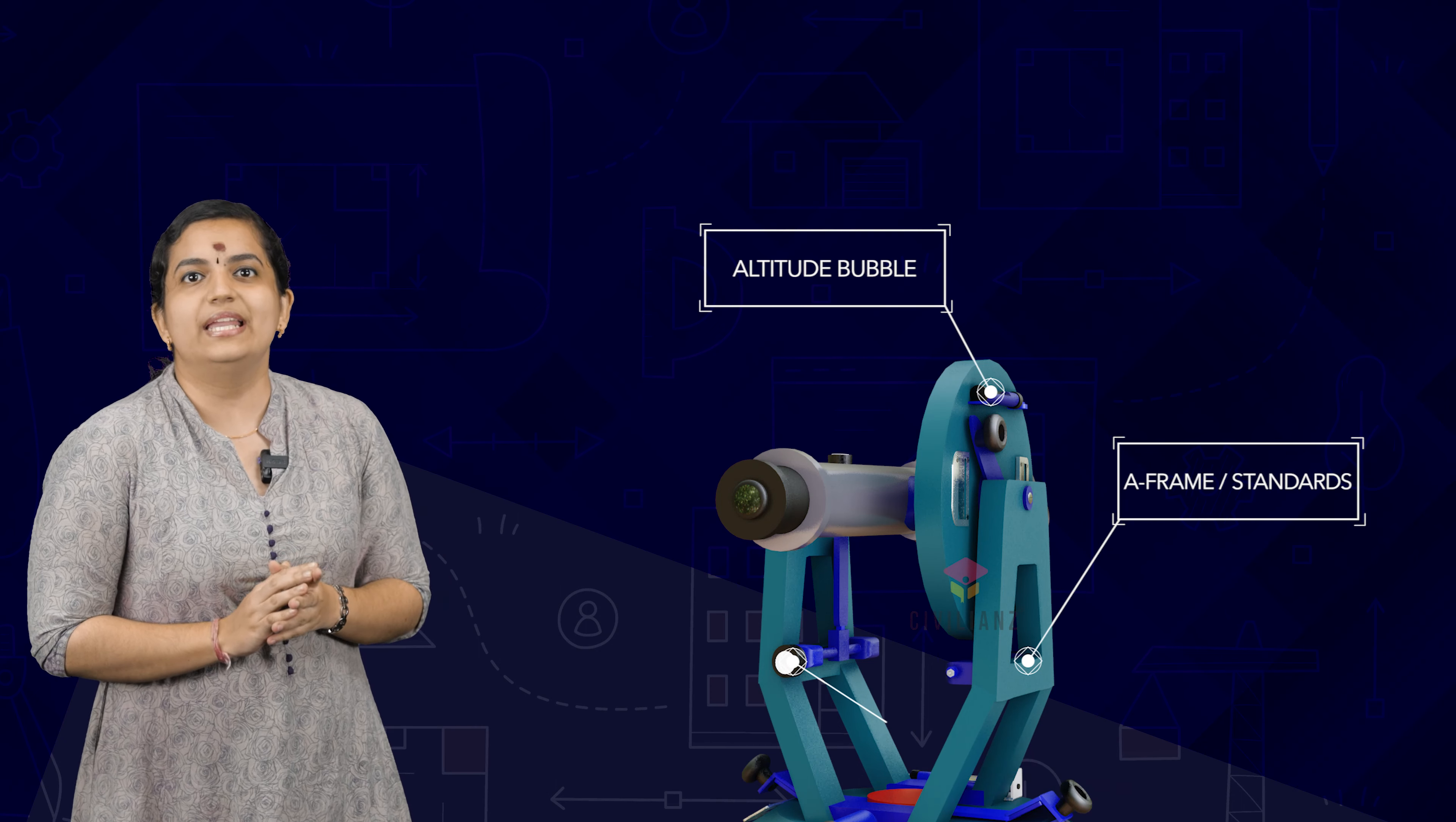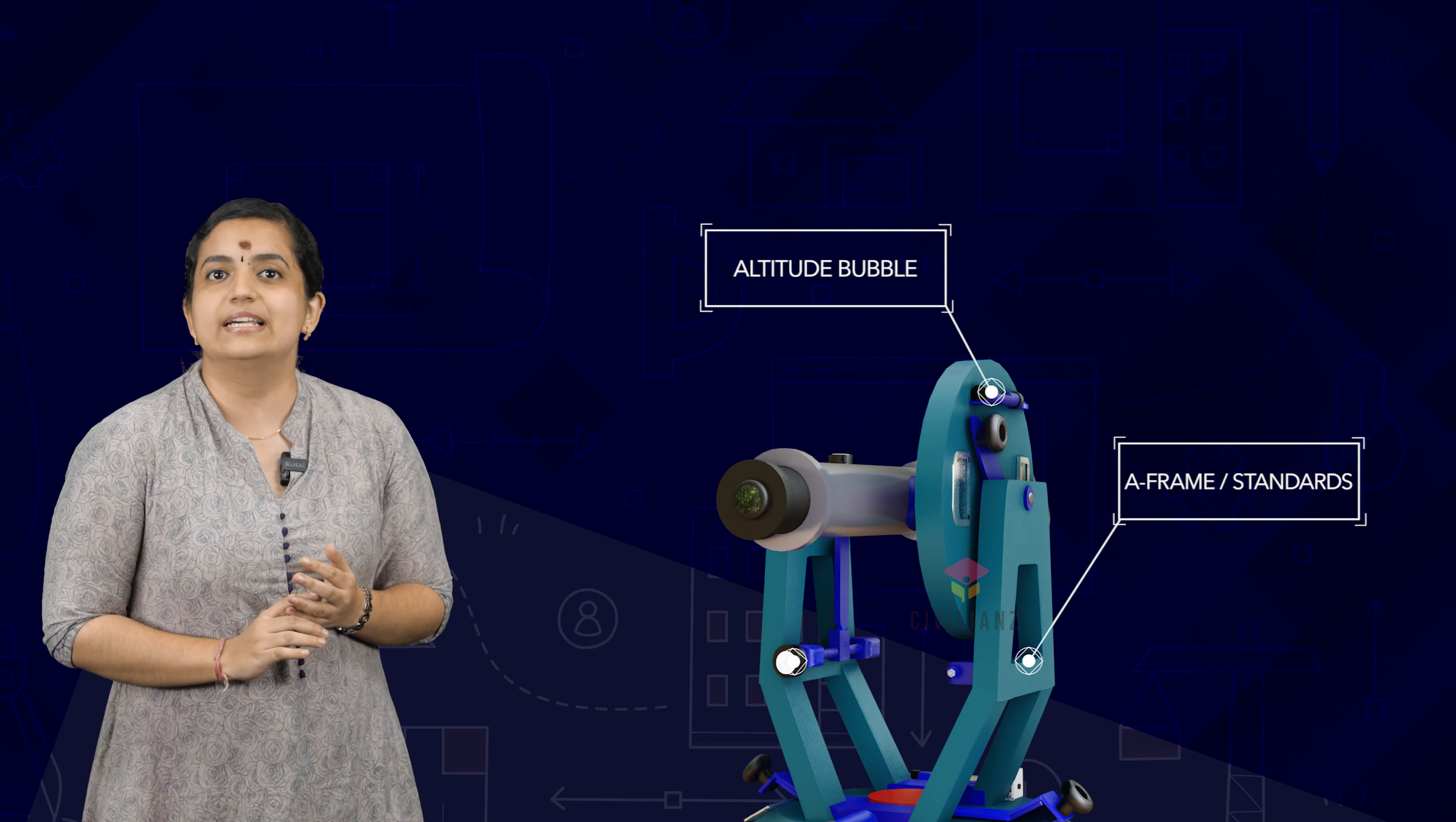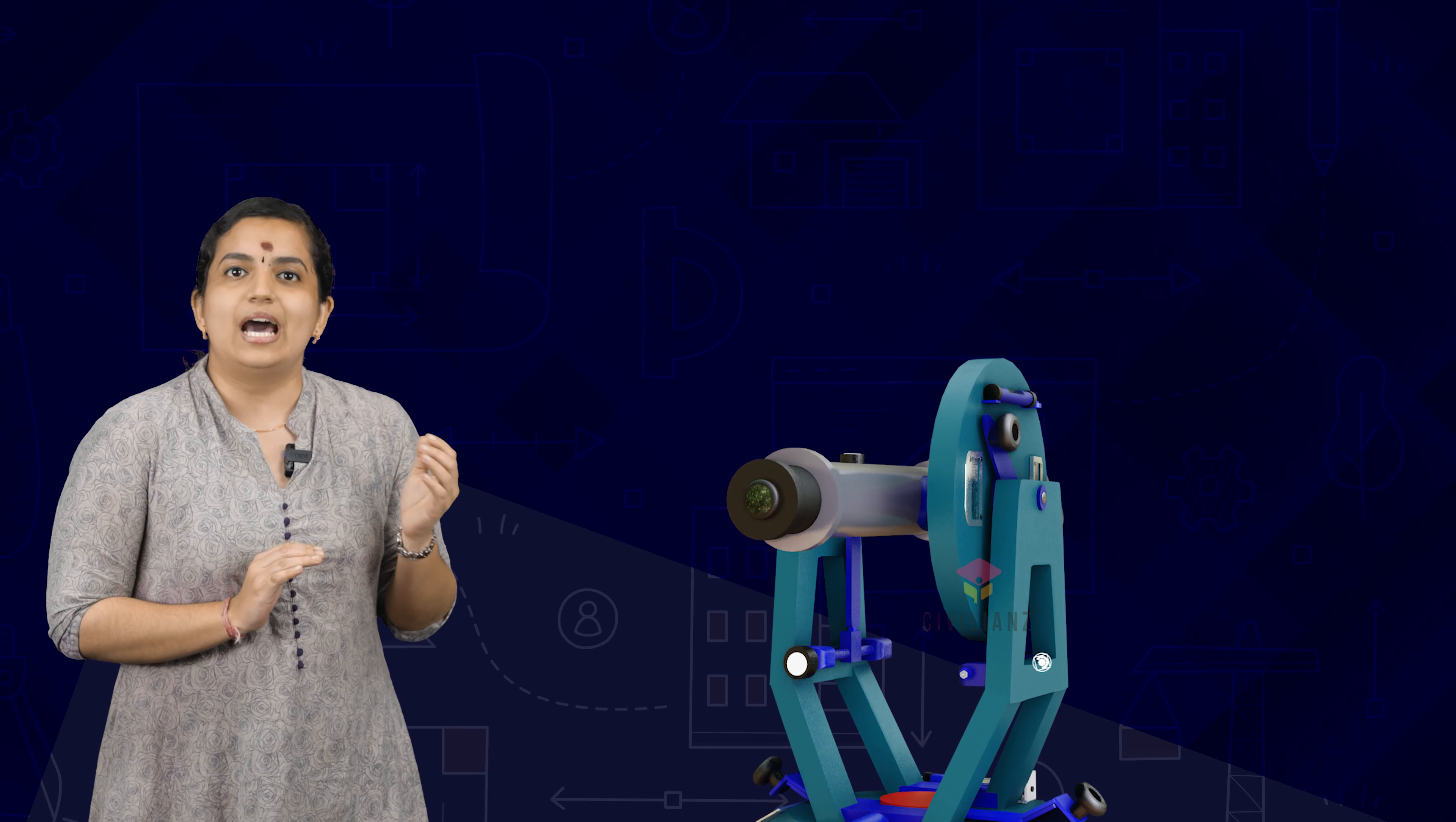Two standards resembling the English letter A are present in theodolite to support the telescope, vertical circle, and the index frame. A long sensitive bubble tube known as altitude bubble is placed on top of this index frame.